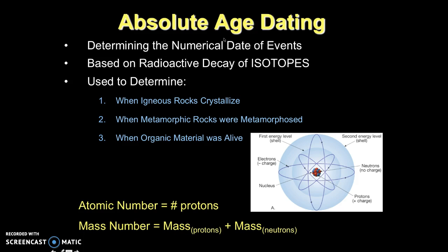Absolute age dating does tell us the numerical date of events. It's based on the radioactive decay of isotopes. The important thing to note is that when we're looking at samples, it tells us when igneous rocks crystallized, when metamorphic rocks were metamorphosed, and when organic material was last alive, so when did it take its last breath.